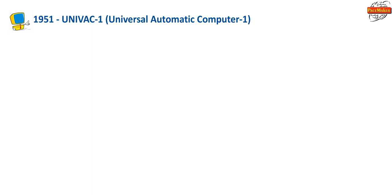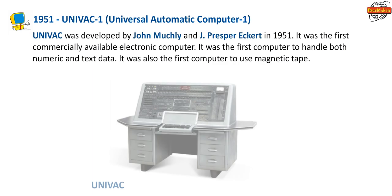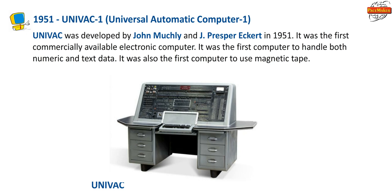1951 — UNIVAC I (Universal Automatic Computer I): UNIVAC was developed by John Mauchly and J. Presper Eckert in 1951. It was the first commercially available electronic computer. It was the first computer to handle both numeric and text data.